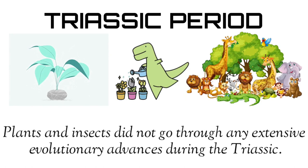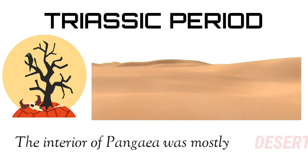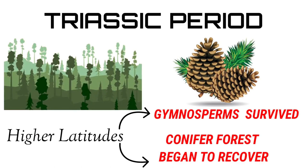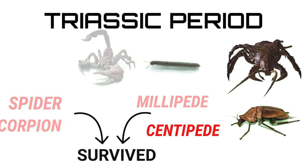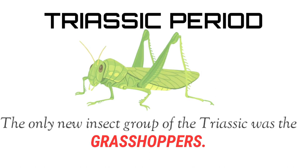Plants and insects did not go through any extensive evolutionary advances during the Triassic. Due to the dry climate, the interior of Pangaea was mostly desert. In higher latitudes, gymnosperms survived and conifer forests began to recover from the Permian extinction. Mosses and ferns survived in coastal regions. Spiders, scorpions, millipedes, and centipedes survived, as well as the newer groups of beetles. The only new insect group of the Triassic was the grasshoppers.